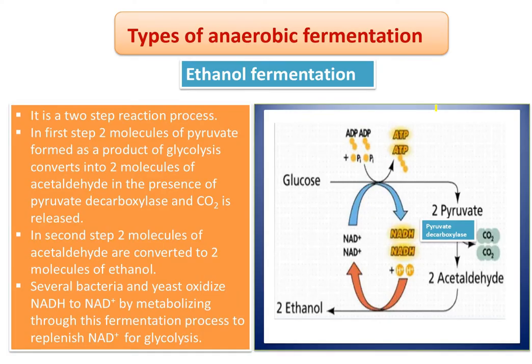When we talk about anaerobic fermentation, there are two types: the first is ethanol fermentation and the second is lactic acid fermentation. Glucose ends up as two molecules of pyruvate in glycolysis, which takes place in the cytoplasm. When pyruvate is formed, it will either enter the Krebs cycle or follow the anaerobic pathway. In the anaerobic pathway, we can have ethanol as well as lactic acid fermentation.